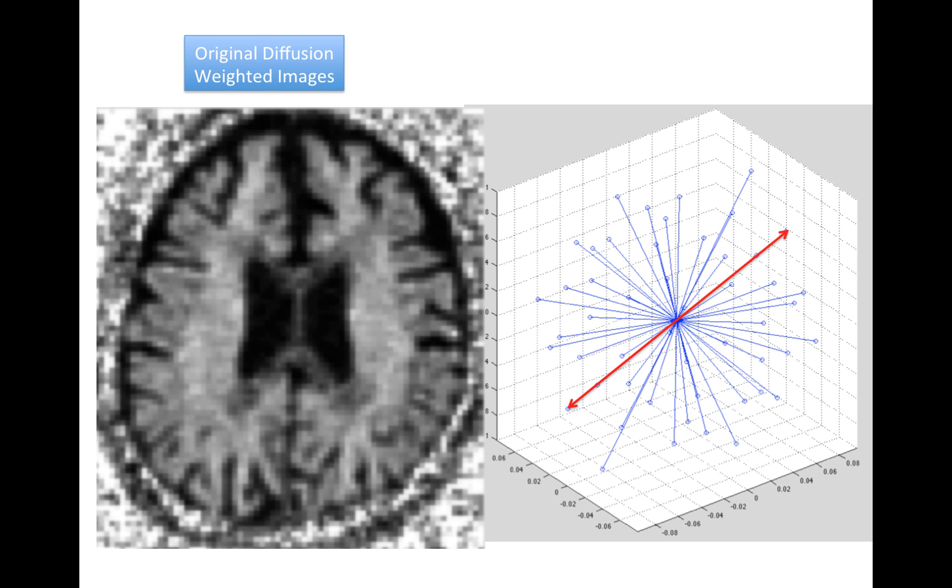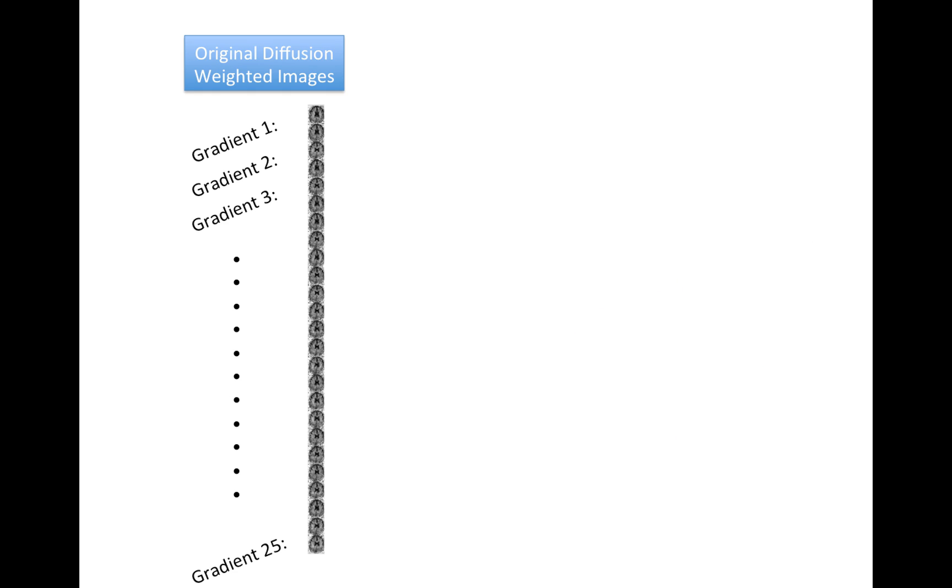So, again, we start off with a diffusion image. Here's one image, a slice of a volume of the brain. And each of these volumes really measure only one diffusion gradient direction. So they're weighted by that diffusion gradient direction. So in order to get the whole profile in just not one direction, we'll have to acquire a lot of images. So in this case, we do 25.